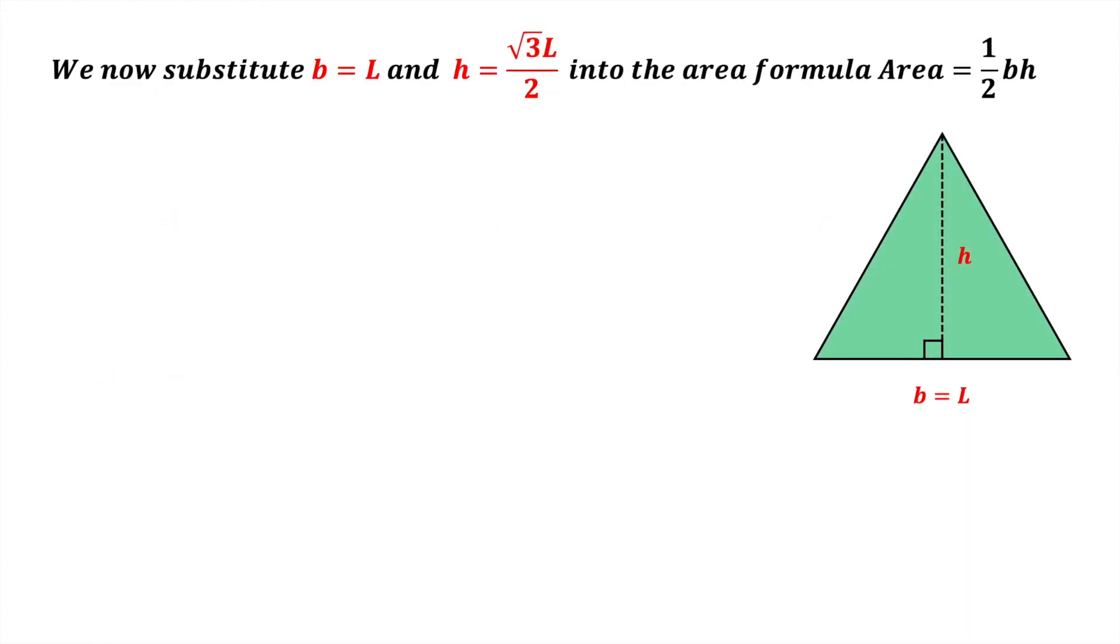Now we can substitute b equals L and h equals root 3L divided by 2 into the area formula area equals half bh. Therefore, the formula area equals half bh becomes area equals a half L times root 3L divided by 2 in brackets.